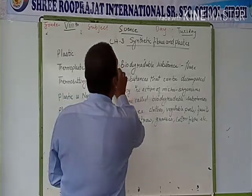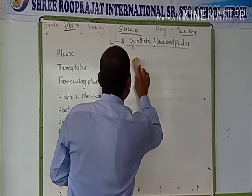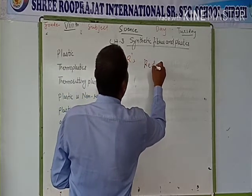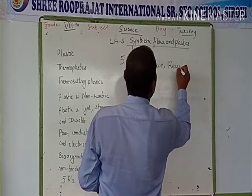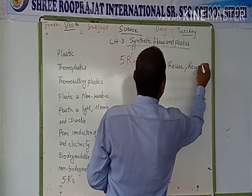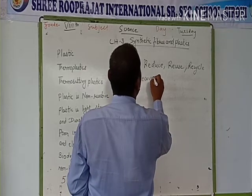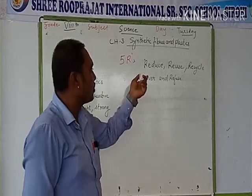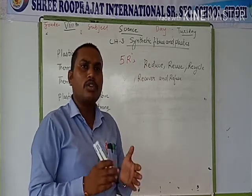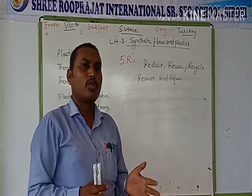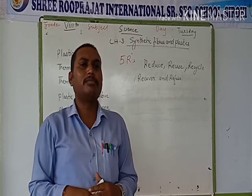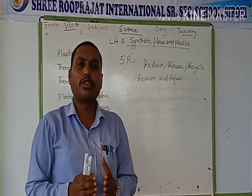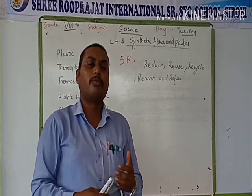The five R's are: Reduce, Reuse, Recycle, Recover, and Refuse. These are the five R's we should follow to conserve our environment. First, Reduce — we should reduce our needs so that only necessary substances are used, because many people take unnecessary items. By reducing our needs, there will be less wastage and environmental pollution will be reduced.